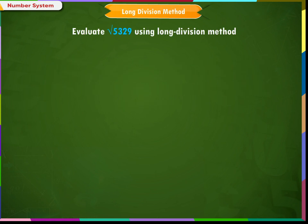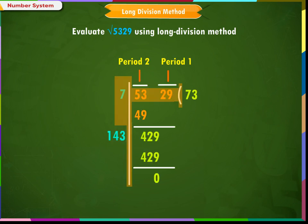Example 1: Evaluate √5329 using the long division method. Solution — Step 1: Group the digits in pairs, starting with the digit in the unit's place. Each pair and the remaining digit, if any, is called a period. Let us mark 53 and 29 as two pairs, so we have two periods.